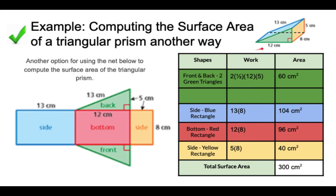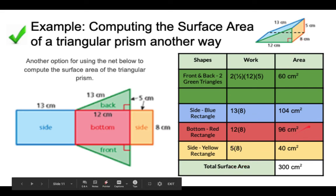And the last one is over here, 5 by 8, the side that stands straight up here, 8 by 5. And that's 40 centimeters squared when you multiply your 5 times your 8.